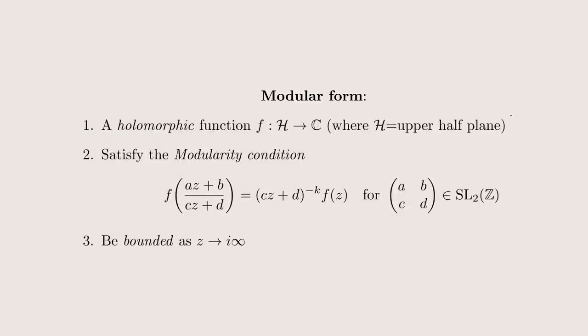The formal definition of a modular form is that it's a function satisfying the following three conditions. First, that it is holomorphic, which essentially means differentiable but for complex numbers. But the other two conditions really make you wonder what their purpose even is. To explain this, let's start with a seemingly unrelated topic: lattices.